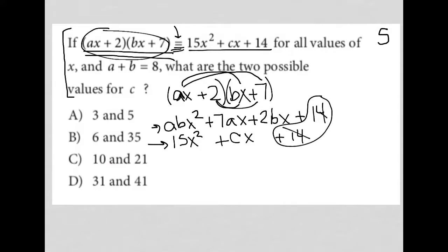But in terms of my x squared term, the top expression has ab, the bottom one has 15, which tells me that ab must equal 15. That's the only way in which the top expression equals the bottom expression. And then in terms of my x terms here, that tells me that 7ax plus 2bx must equal cx.